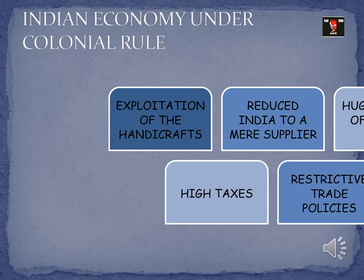The various policies which the British introduced completely exploited the handicraft industries and led to huge unemployment in the country. Next, they introduced strategies wherein exports of India's finished goods were considerably reduced and India was forced to export only raw materials, thereby reducing India's status as an exporter of finished goods on the global platform.